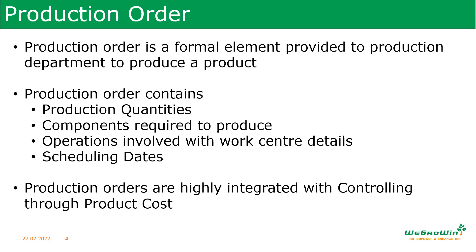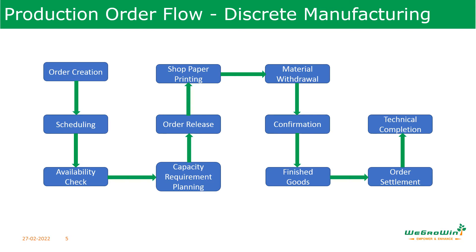Production orders are highly integrated with controlling and product costing — planned costs are calculated when we create the production order. The production process in discrete manufacturing starts when a production order is created. The production order can either be created manually or by converting a planned order, which was created from MRP, into a production order.